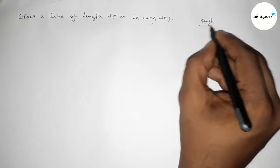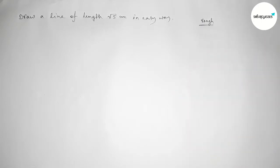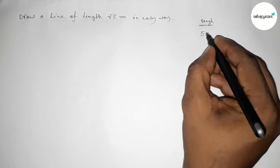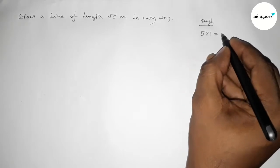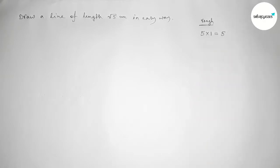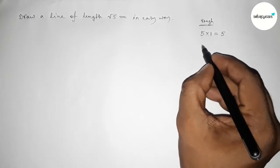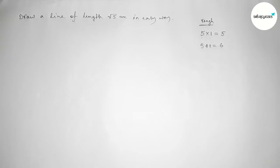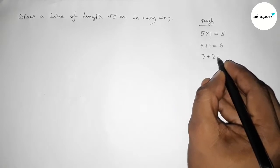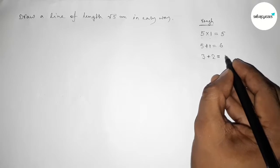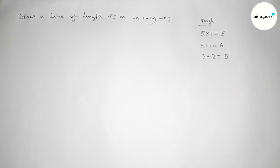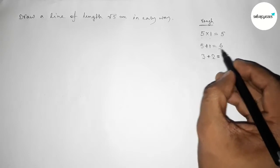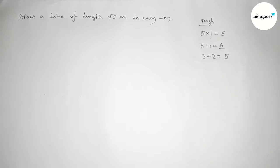First, roughly discussing some important calculations. We can write 5 as 5 into 1, so 5 into 1 equals 5. Next, 5 plus 1 equals 6. And 3 plus 2 equals 5.